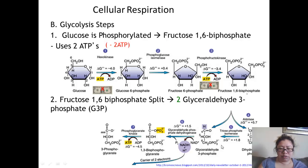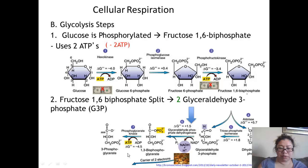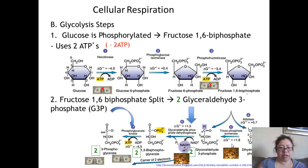Each glyceraldehyde-3-phosphate produces a lesser form of energy. Each converts to 1,3-bisphosphoglycerate, producing an NADH and an ATP. Since there are two molecules of glyceraldehyde-3-phosphate, you get two NADHs and two ATPs from this step. Then the 3-phosphoglycerate carries on to the next step. So far, we have used two ATPs and gotten out two ATPs and two NADHs.